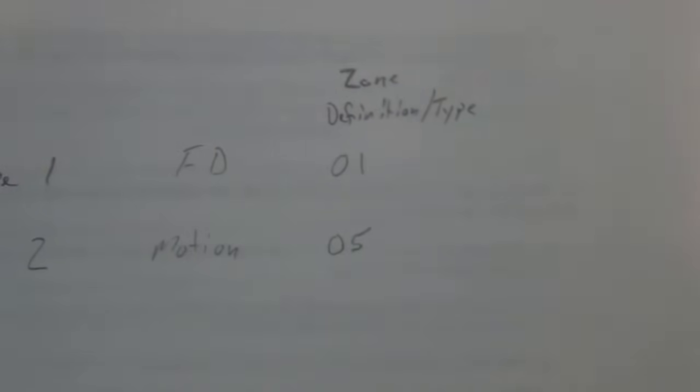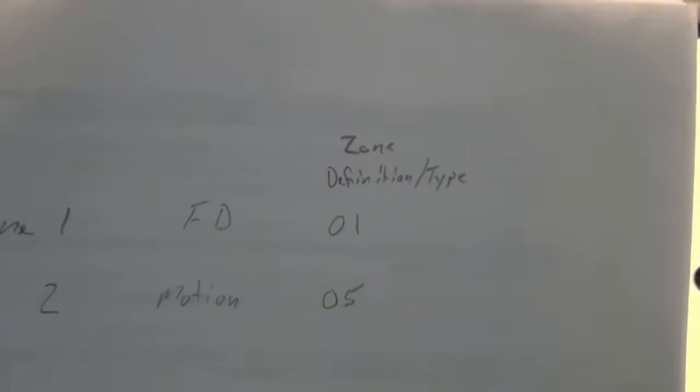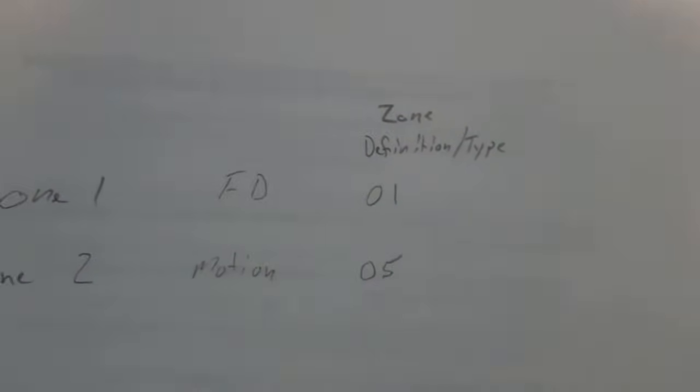In stay mode, your motion detectors are the only things that are bypassed. Your doors, windows, glass breaks, smoke detectors, all those will be armed and active. So when you're in stay mode, the only thing affected is usually anything that's set as an 05, which typically is just motion detectors.